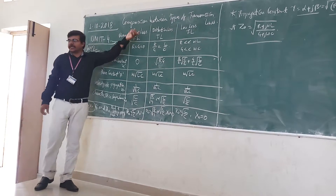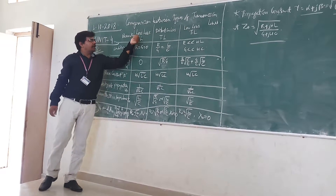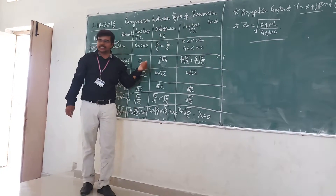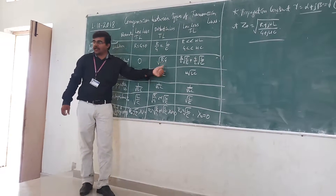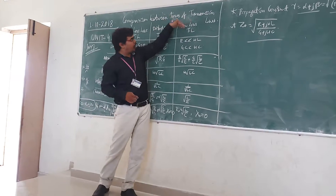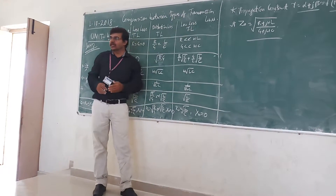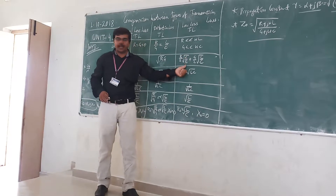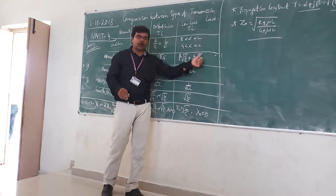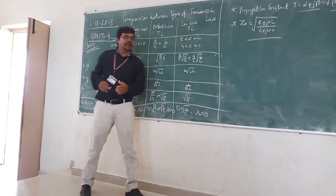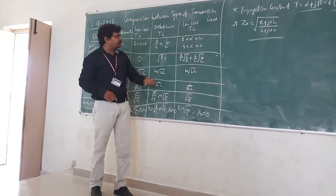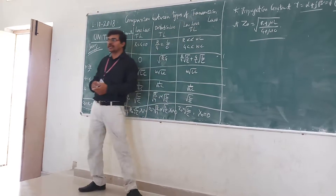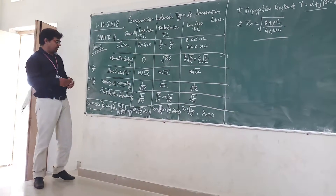For the attenuation constant alpha: in lossless it is 0, in distortionless it is square root of RG, and in low loss it will be R by 2 times square root of C by L plus G by 2 times square root of L by C. These are obtained by substituting the conditions into the propagation constant formula.